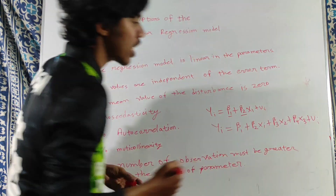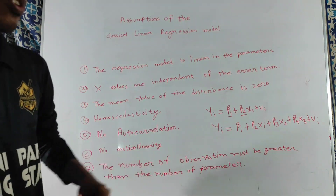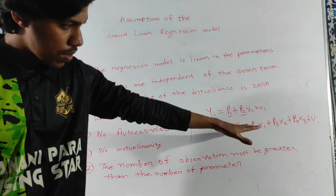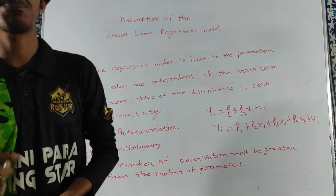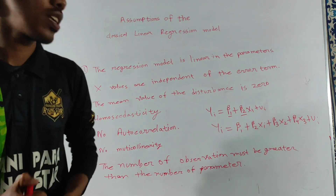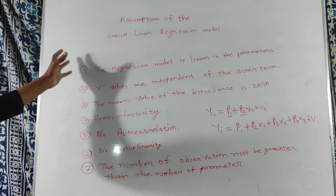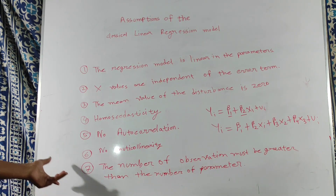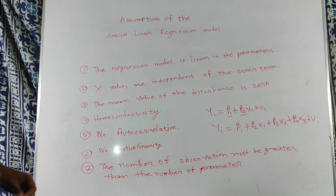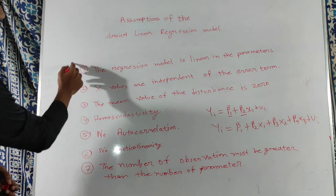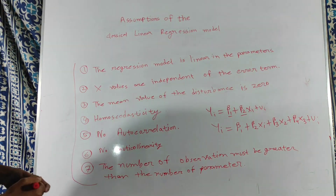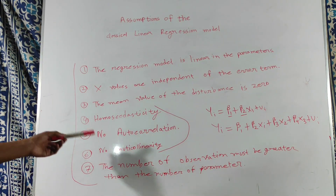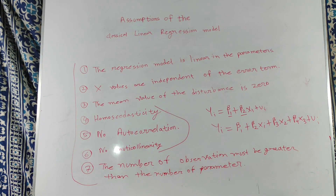To summarize, our assumptions include: the model is linear in parameters, no correlation between X and the error term, the mean value of the disturbance is zero, homoscedasticity, no heteroscedasticity, no autocorrelation, and no multicollinearity problem.